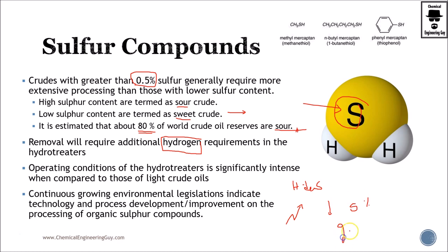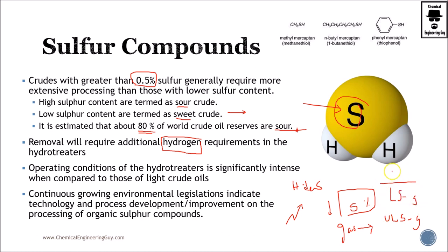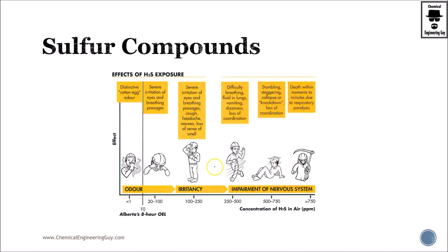For instance, I'm pretty sure that you have seen gasoline labeled as ultra-low sulfur gasoline, meaning that it has almost no sulfur content. You can also find low sulfur gasoline, and nowadays you cannot find anything higher than low sulfur gasoline.